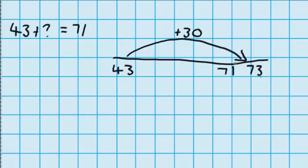Okay, so I've got to 73, which is a little bit too far, so now I need to jump back a little bit. I need to jump back from 73 to 71, which means I'm going backwards 2, or subtracting 2.